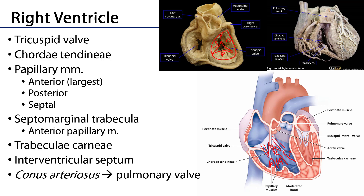The anterior papillary muscle is the largest among the papillary muscles and it's the most anteriorly oriented. We can see that there, as well as chordae tendineae from a cusp of the tricuspid valve.